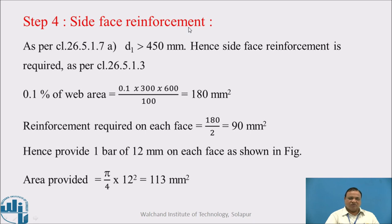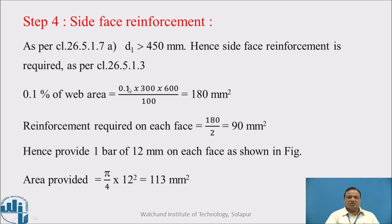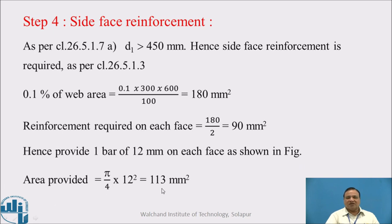Regarding side face reinforcement: as per clause 26.5.1.7(a) of IS 456, since D1 is greater than 450 mm, side face reinforcement as per clause 26.5.1.3 must be provided. As per this clause, 0.1% of the web area must be provided as side face reinforcement. We calculate 0.1/100 × 300 × 600 = 180 mm². Reinforcement required on each face is 180/2 = 90 mm². Provide 1 bar of 12 mm on each face; area provided is π/4 × 12² = 113 mm².